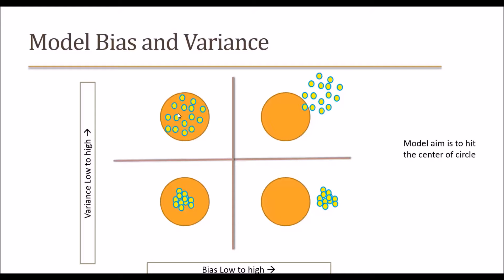Now the top left diagram: this model has low bias — most of them are near the center — but very high variance; the spread is really high. Then the top right model has high bias — none of them are near the center — and high variance. So to summarize: the bottom right has high bias but low variance, most points clustered together but away from center. The bottom left has low bias and low variance, with most points near the center. This is the best model out of all four.